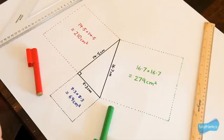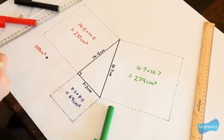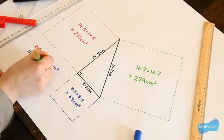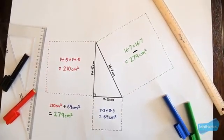So for this example which blocks would I pick? Well these two smaller blocks together have an area of 210 plus 69 which is 279 square centimeters. That's the same as the area of the largest square.